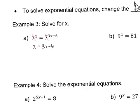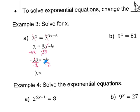From here, it just becomes like a normal equation. My goal is to get x by itself, so I'll get all the x's on one side. I'll subtract 3x from this side to cancel that piece. So 1x minus 3x is negative 2x, and this side is a negative 6 that drops down. Then I'll divide by negative 2.